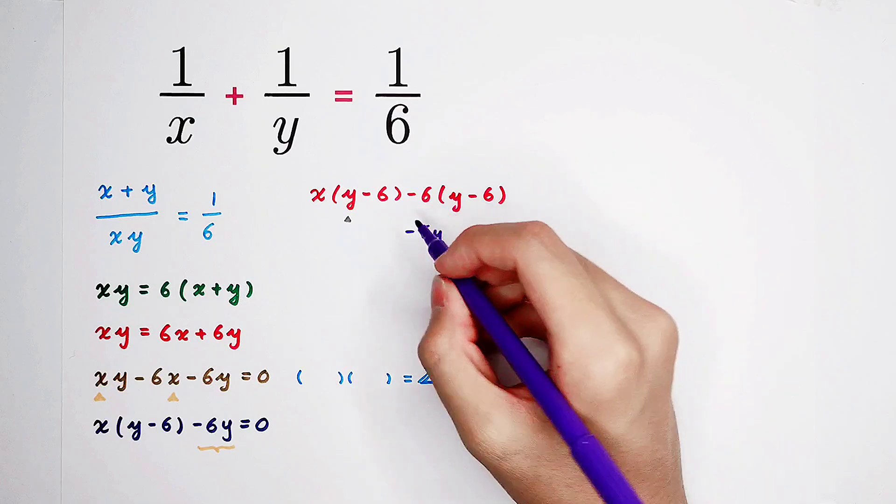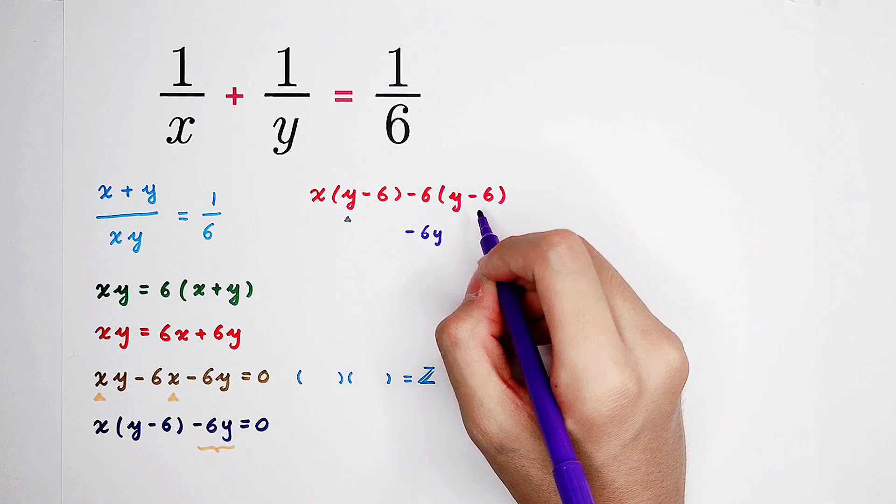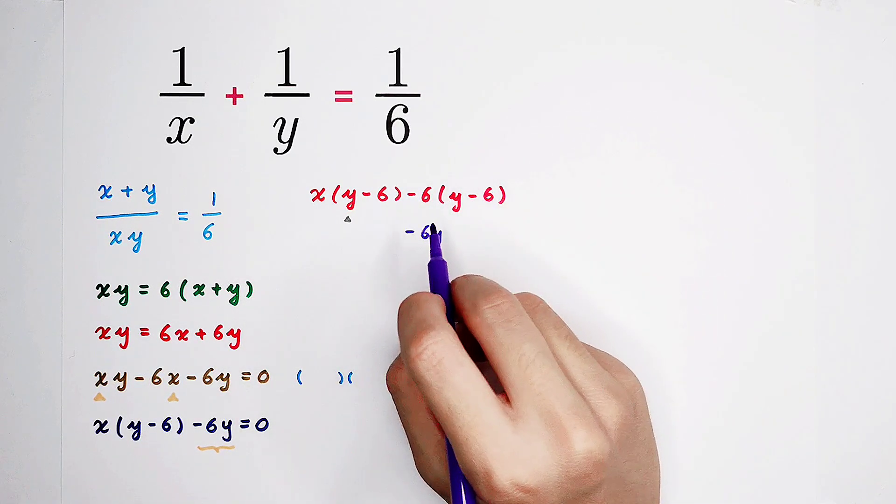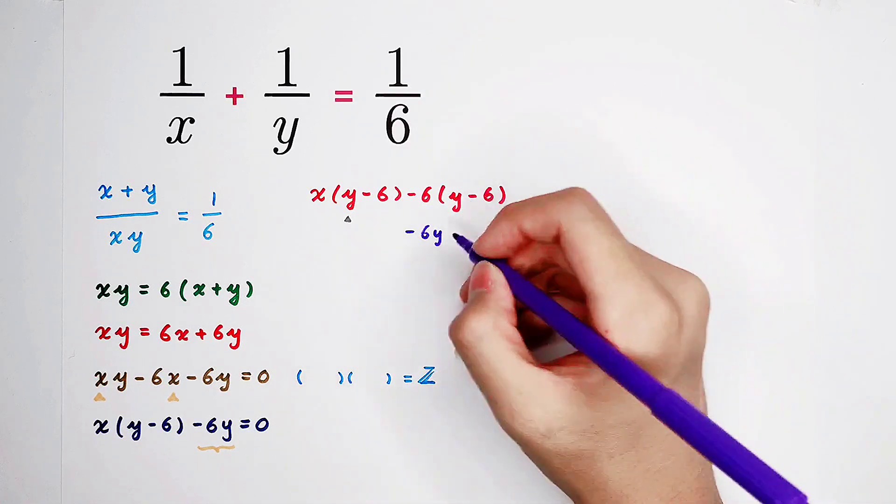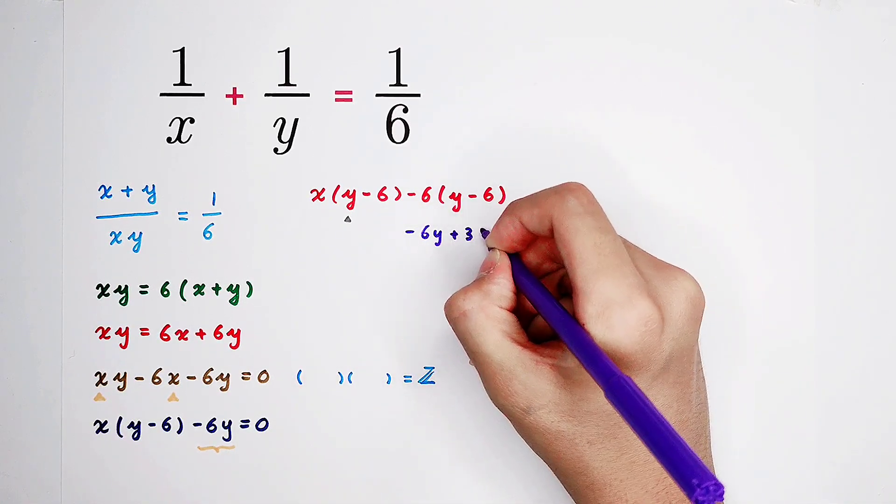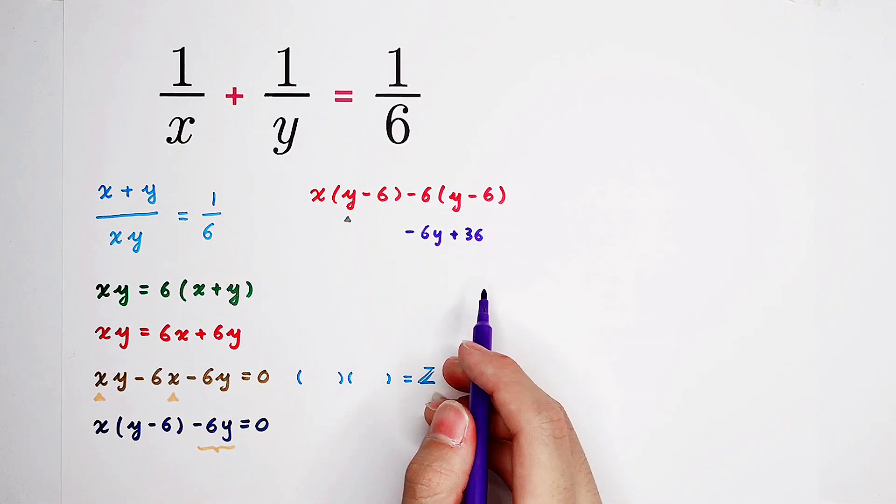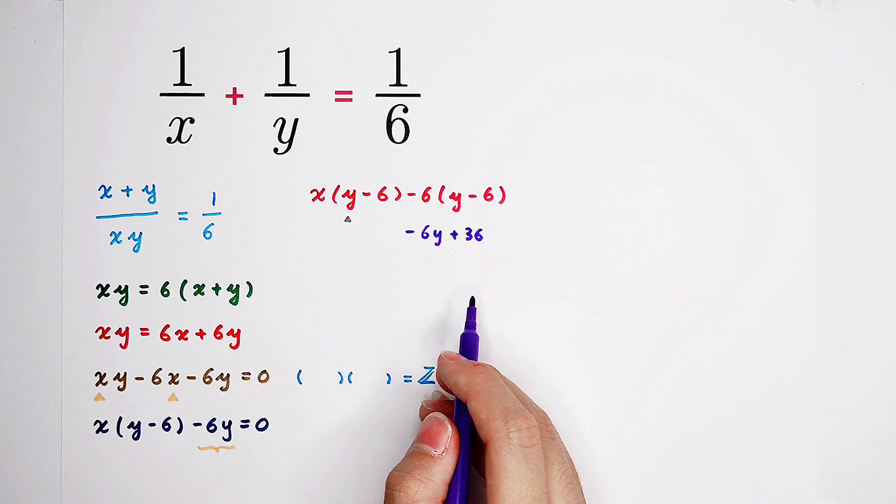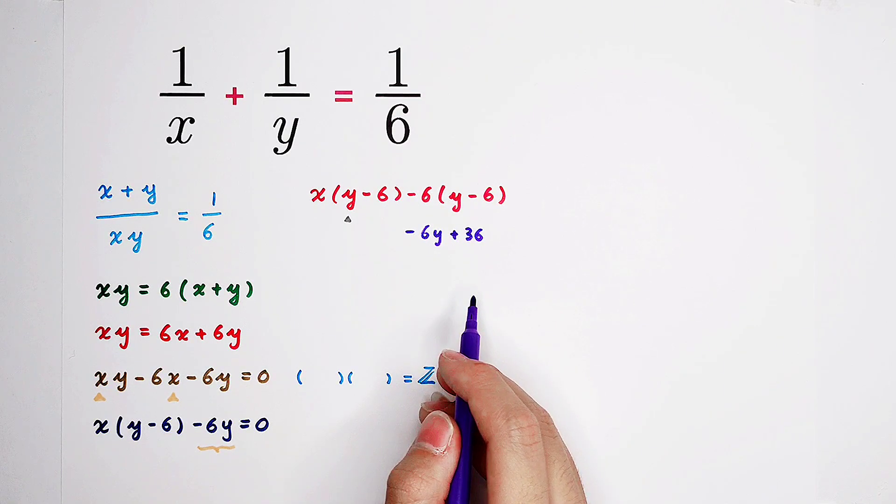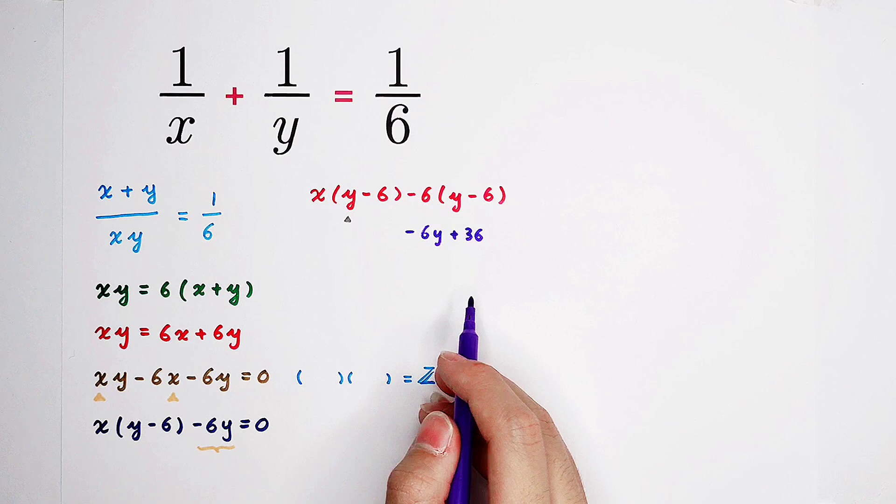Then, minus 6 times negative 6. So it is minus minus 36. It is plus 36. So now, here is the 36. Where does it come from? From, of course, from our factorization, from our idea.